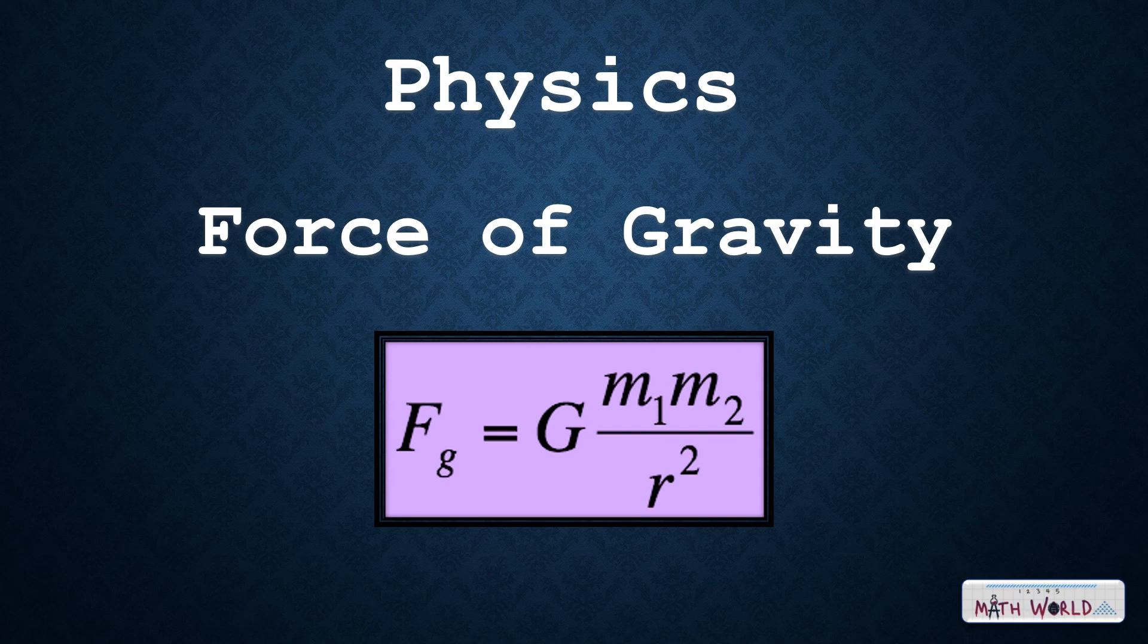The formula is F equals G times m1 m2 divided by r squared, where F is the force of gravity, G is the gravitational constant, m1 and m2 are the masses of the two objects, and r is the distance between the two objects.